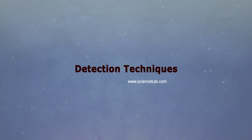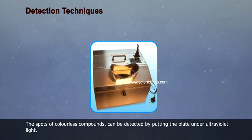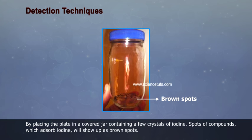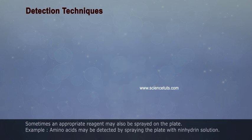Detection Techniques: 1. The spots of colorless compounds can be detected by putting the plate under ultraviolet light. 2. By placing the plate in a covered jar containing a few crystals of iodine. Spots of compounds which adsorb iodine will show up as brown spots.